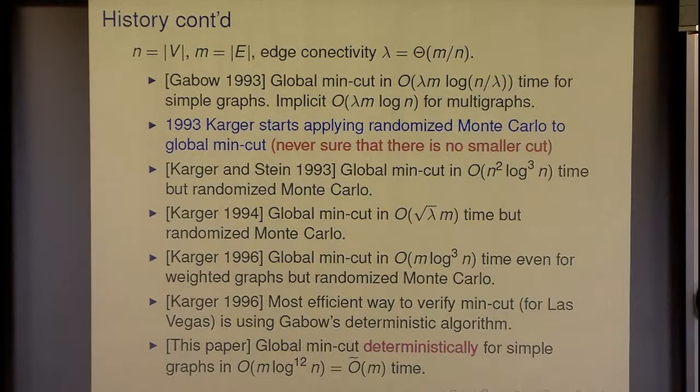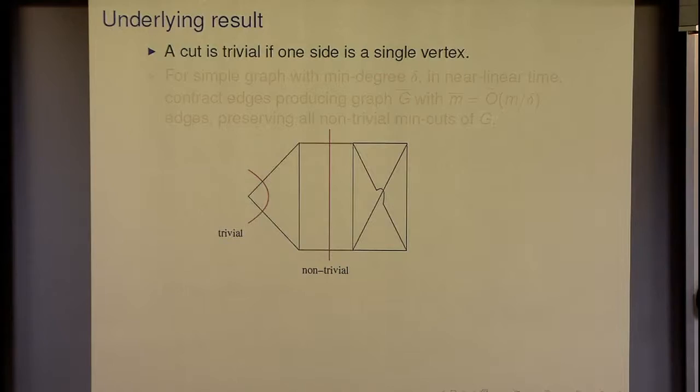The result of this paper is that we can find the global min-cut deterministically for simple graphs in near-linear time, with a log-to-the-12 factor. Interestingly, Google is actually interested in implementing this — and while many theory results don't work directly in practice, there are often important elements in the theoretical construction that are very relevant for practical graph clustering.